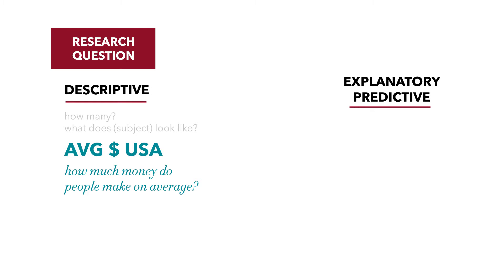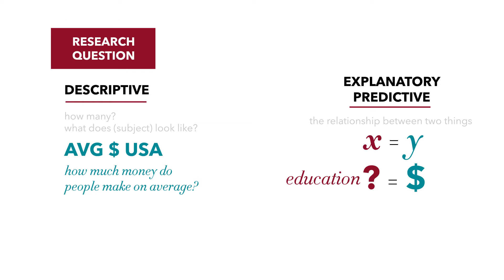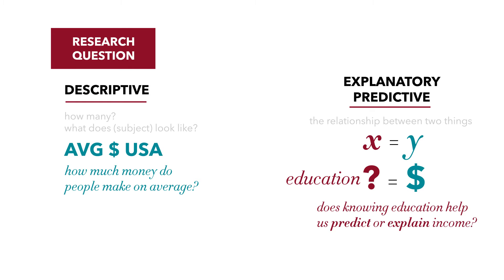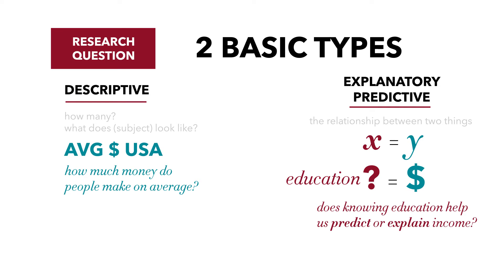An explanatory or predictive question examines the relationship between two things. So we may know the average income in the United States, but then move on to ask: what helps us explain that income? Perhaps one's education level might help explain income. Does knowing education help us predict or explain income? Those are the two basic types of research questions we'll have.